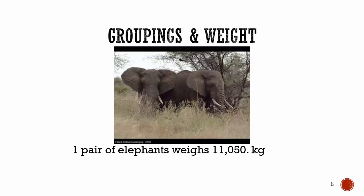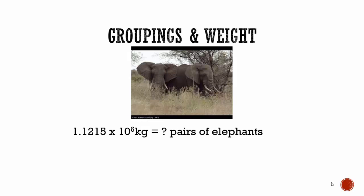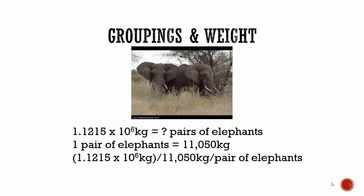Let's do a similar one. A pair of elephants weighs 11,050 kilograms. I hand you 1.1215 times 10 to the sixth kilograms, or 1,121,500 kilograms of elephants. How many pairs of elephants do you have? Write down the question, write down what you know, and since you're going from mass to number, you divide. You take the weight, divide it by the mass per pair — the kilograms cancel out — and you get 101.5 pairs of elephants.